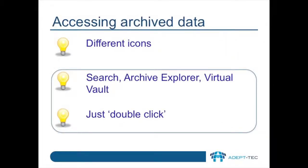Accessing this archived content can be done in a number of different ways when you're on the corporate network, or if it's been configured, when you're connecting to corporate email over the internet. You can access the items by using Search, Archive Explorer, and Virtual Vault.